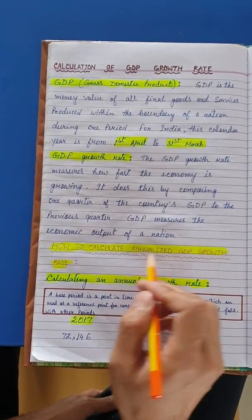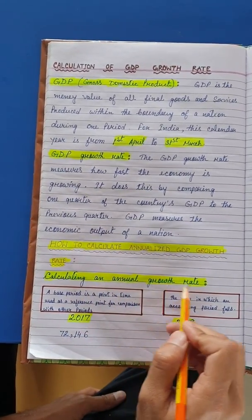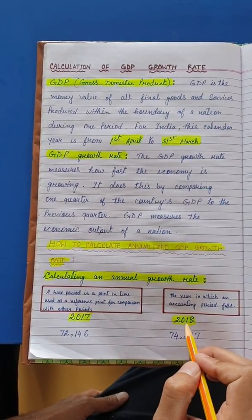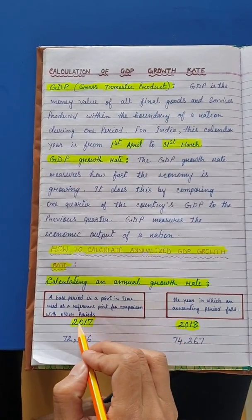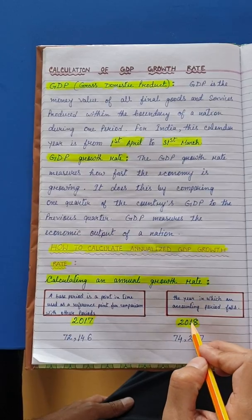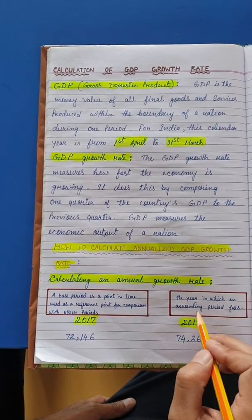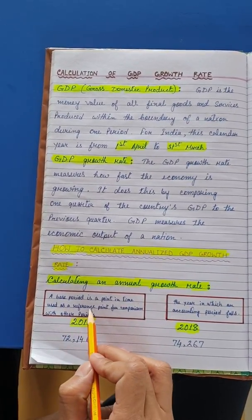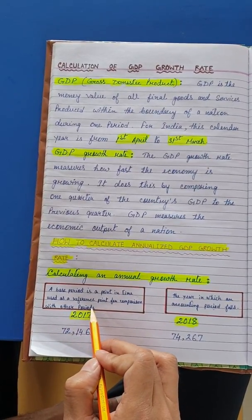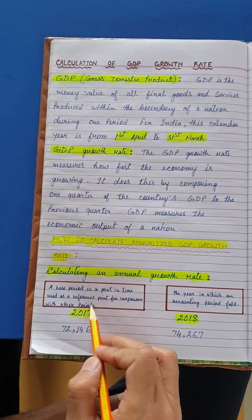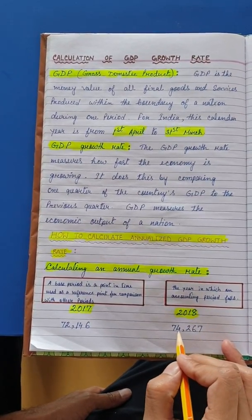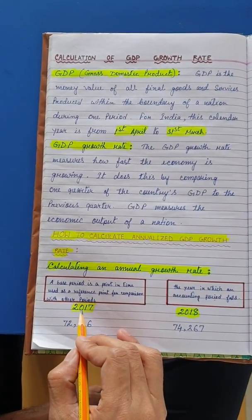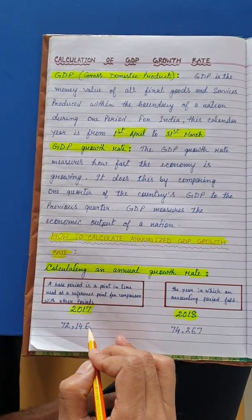Next, how to calculate the annualized GDP growth rate? For calculating an annual growth rate, we have taken two periods: 2017 and 2018, where 2018 is the current year and 2017 is the base year. The current year means the year in which an accounting period falls, and a base period is a point in time used as a reference point for comparison with other periods. We assume that in 2018, the GDP value is 74,267 crores, and in 2017, it was 72,146 crores.